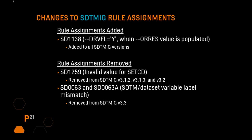There were changes to SDTM IG rule assignments. The first, SD1138 — derived flag equal to Y when original result value is populated — was added and assigned to all SDTM IG versions. The reason is that it appears to have been mistakenly unassigned previously, so this was fixed. Rule assignments were also removed for a few rules. SD1259, invalid value for set code — the assignments were removed from SDTM IG 3.1.2, 3.1.3, and 3.2. The reason is that the set code variable exists only in SDTM IG 3.3, so this rule is not applicable to other previous versions.